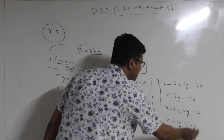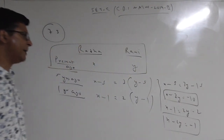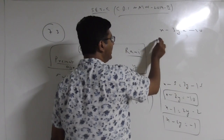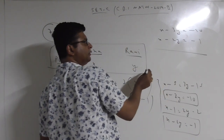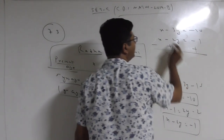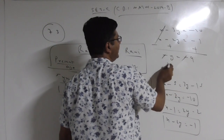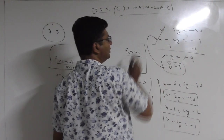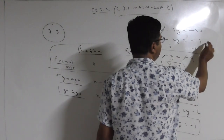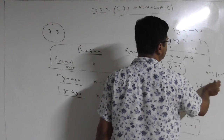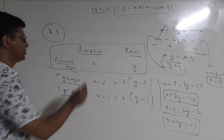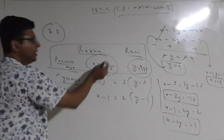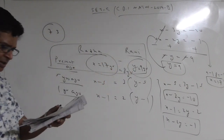Now solving: X - 3Y = -10 and X - 2Y = -1. Both equations have the same coefficient of X, so subtract: -Y = -9, giving Y = 9. Substituting in equation 2: X - 18 = -1, giving X = 17. So Radha's present age is 17 and Rani's is 9. The difference is 17 - 9 = 8, which is there in the first option.